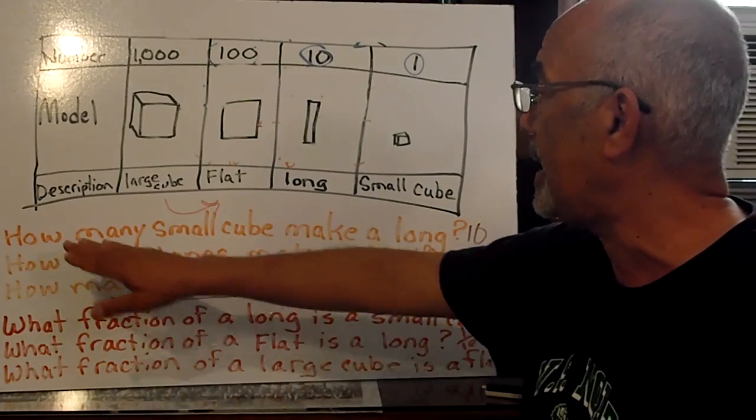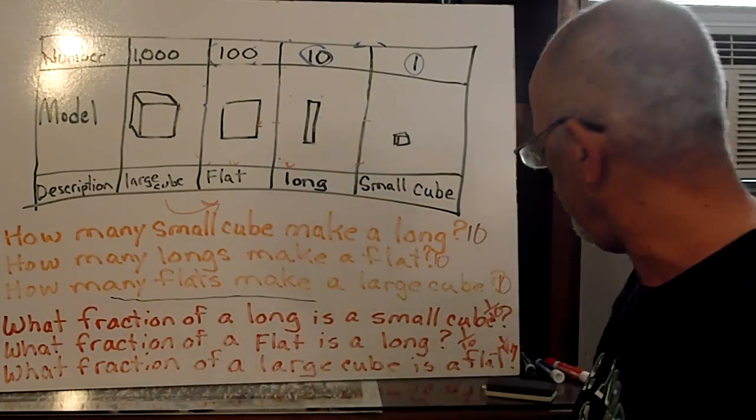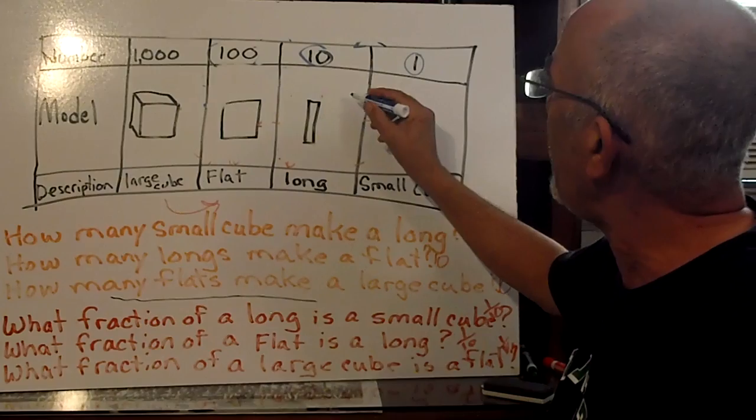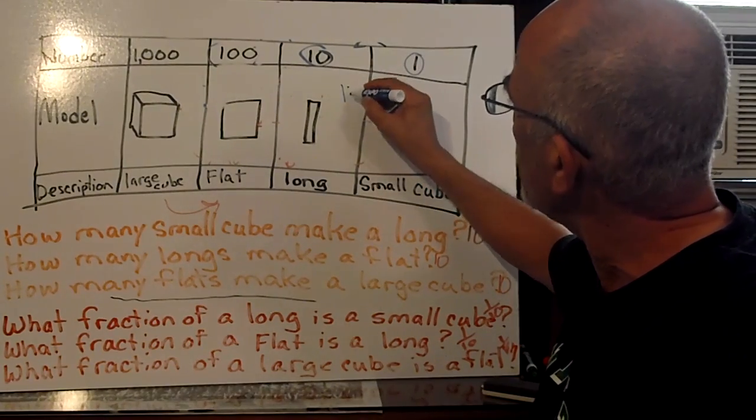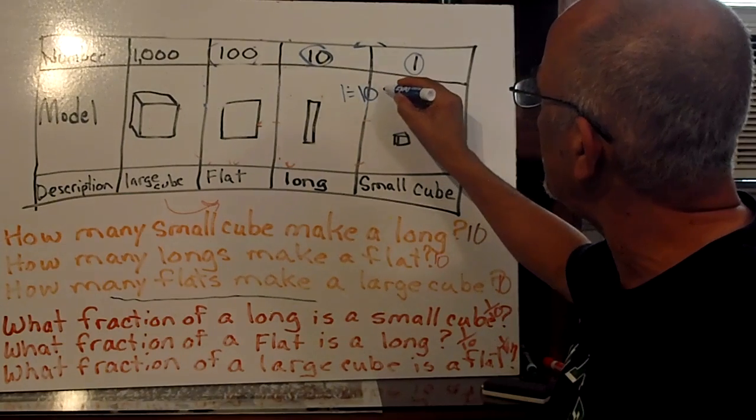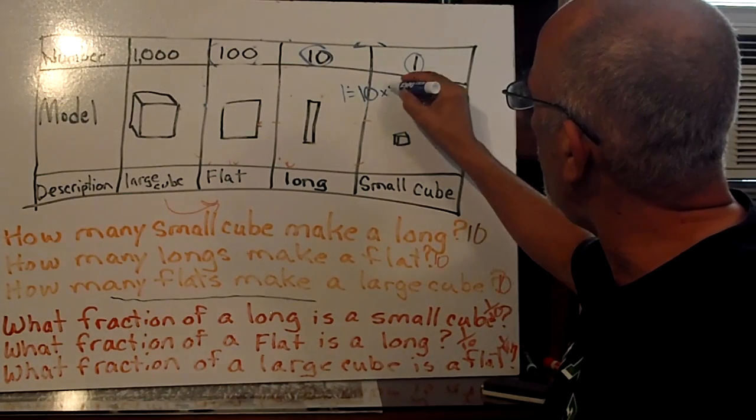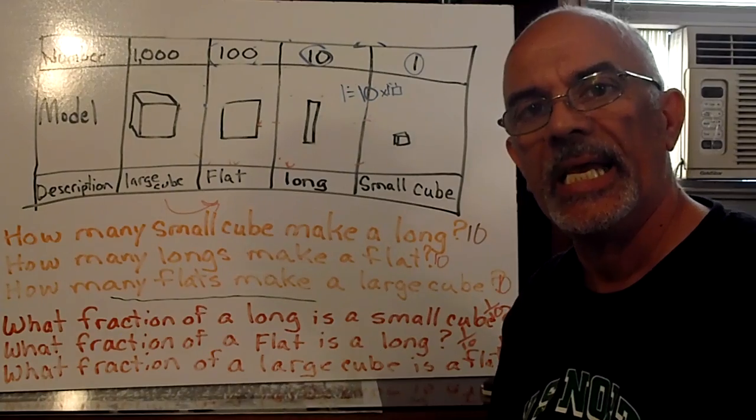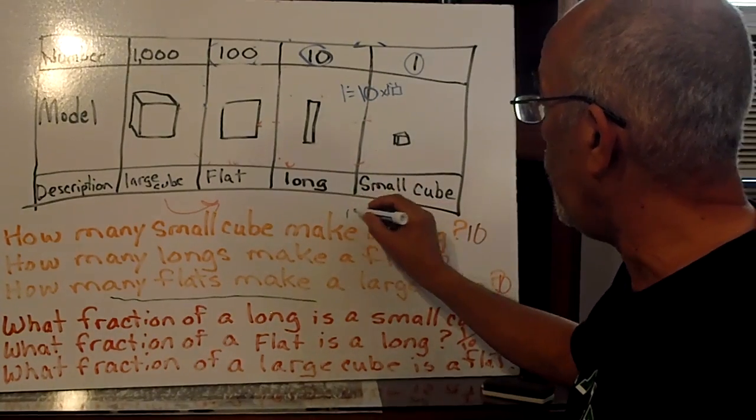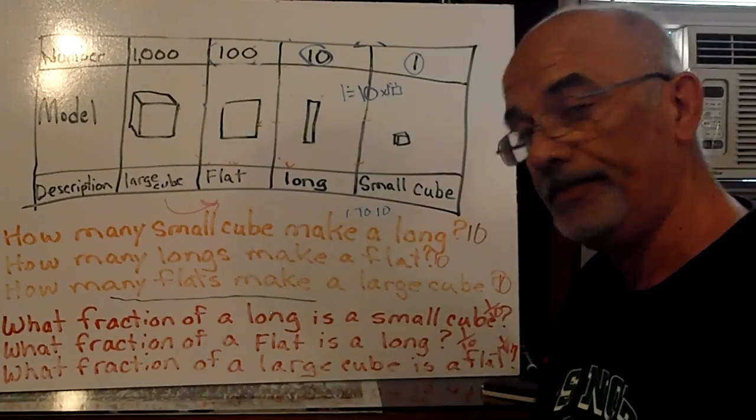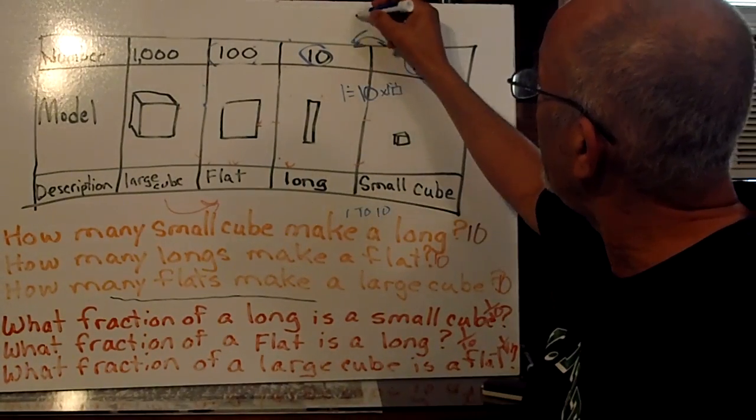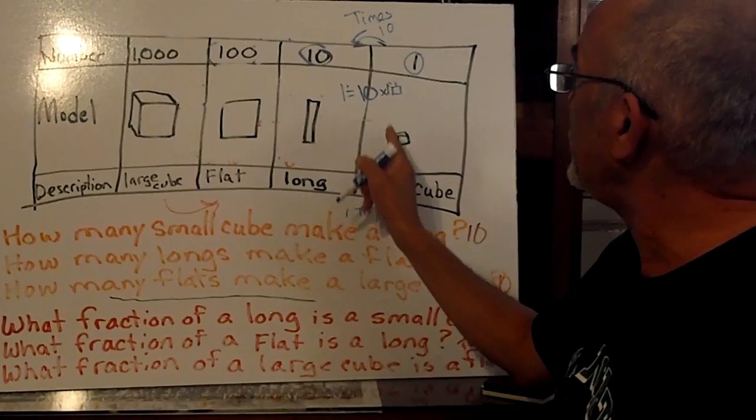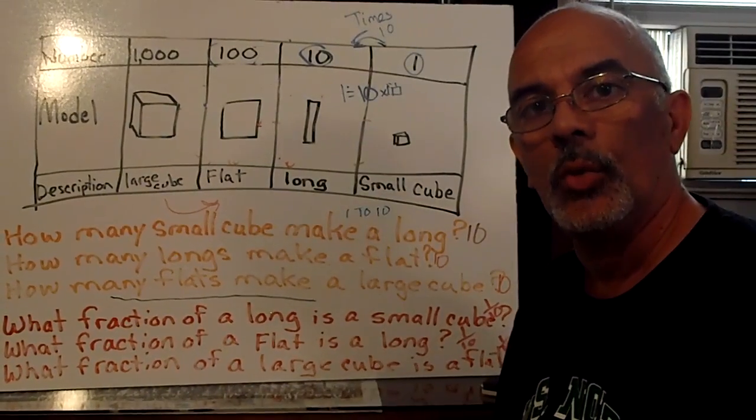So, some questions we've got to ask. How many small cubes does it take to make a long one? If I have one long one, one long one is equal to 10 small ones. Here's that relationship, 1 to 10. So if I move this way, times 10. 1 times 10 equals the long one, or 10.